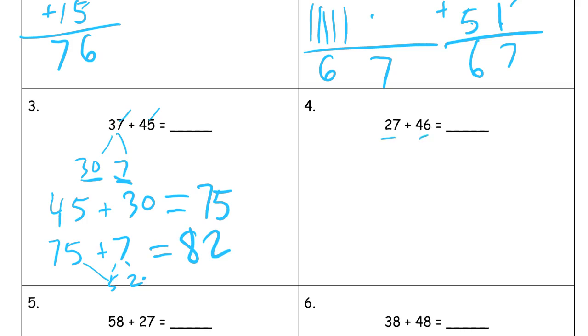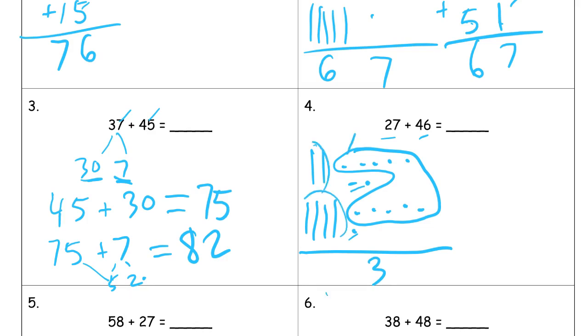27 plus 46. All right, well I'm going to just do this. Since we've been practicing this so much. One, two, three, four, five, six, seven, and 46 is one, two, three, four, one, two, three, four, five, six, and just see how this works. So this seven and this six, can I make a 10? Yeah, I can make a 10 right here. And I have three ones left. And now I'll just count my tens, right? We've got four and two, that's six, and one more, seven, for 73.